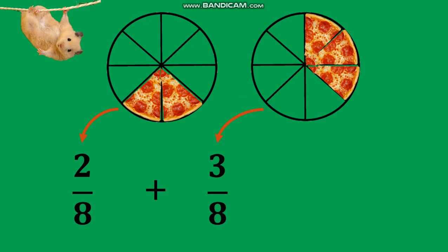It is easy to add and subtract similar fractions. Let us start with addition. Let's add 2 eighths and 3 eighths. To add similar fractions, add the numerators: 2 plus 3 equals 5. Copy the common denominator 8. Change the answer to the lowest term when necessary.